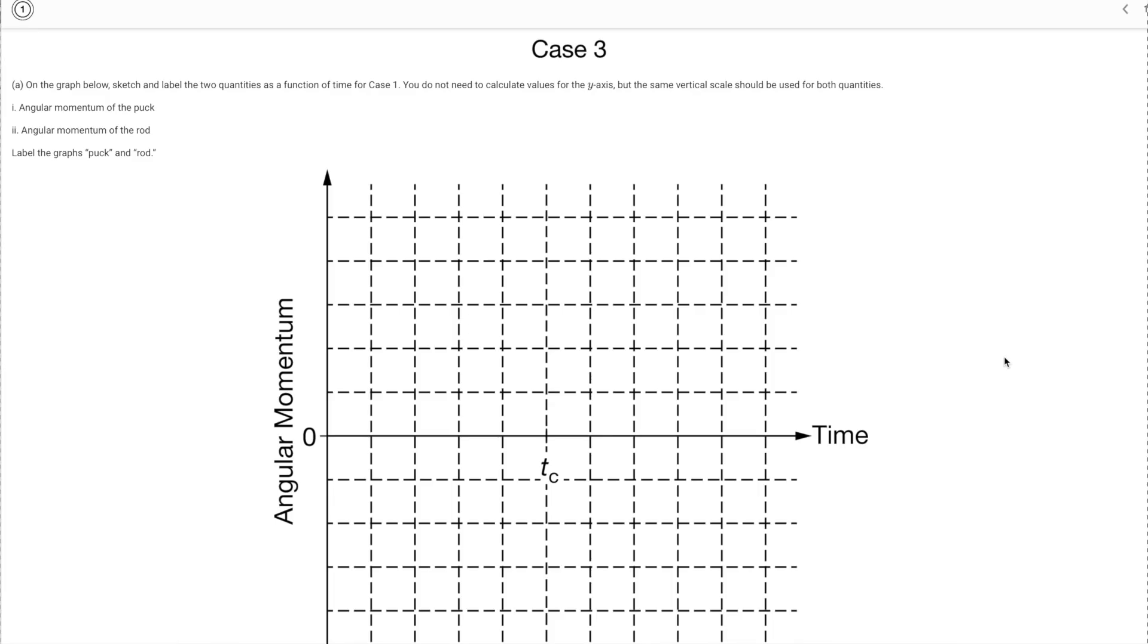For the first part here they want us to graph the angular momentum of the puck and the angular momentum of the rod and we have to make sure that we label them. Then they have this point right here in the middle that's considered T contact point and this was for case one. So what I'm going to do first is I'm going to look at what the puck does in case one.